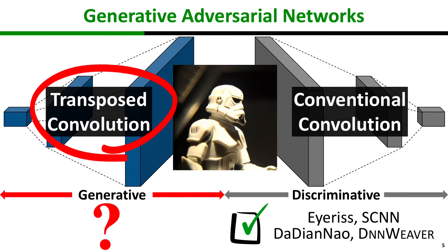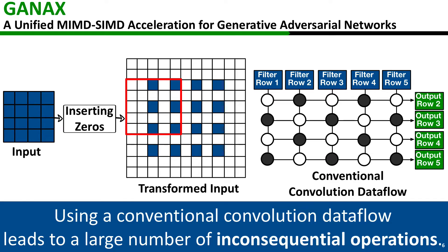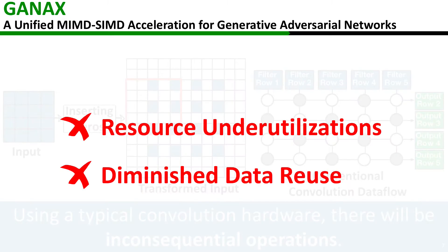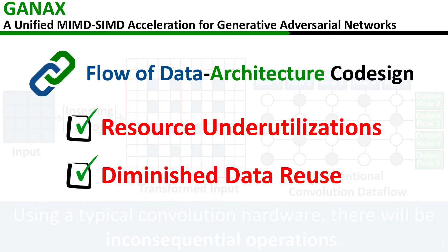Transpose convolution aims to extrapolate new information from its input, and this is in contrast with conventional convolution which performs interpolation. To perform this extrapolation, transpose convolution first inserts zeros between rows and columns and then performs the convolution operation. Because of the inserted zeros, using a conventional convolution data flow will lead to resource underutilization and diminished data reuse.